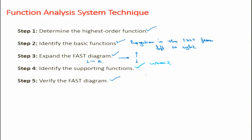Then we need to verify the FAST diagram. For verifying a FAST diagram we can use numerical evaluation. Numerical evaluation helps us see whether the highest order function is actually ranked as function number one, or whether the lowest order function is the lowest rank. That can be verified, and if there is a need we can reiterate or rework on the FAST diagram to develop the correct one.